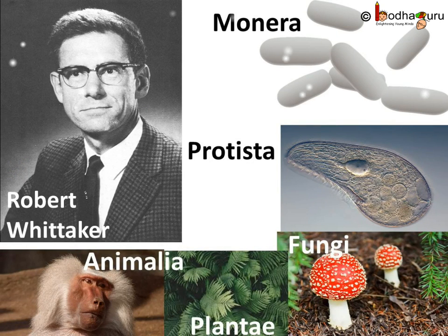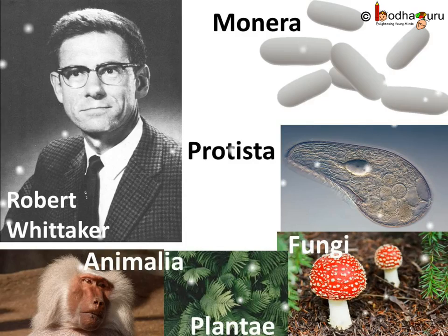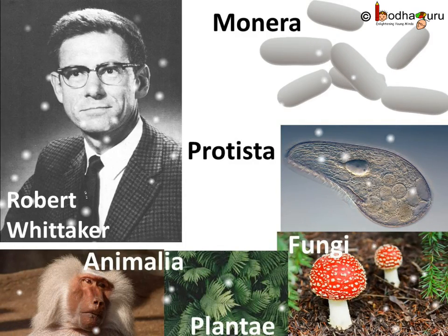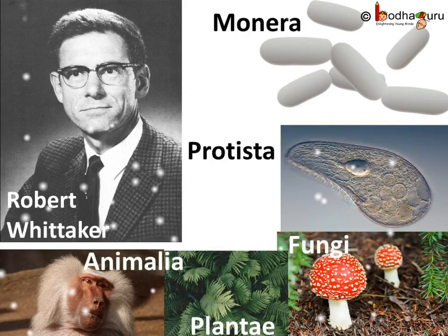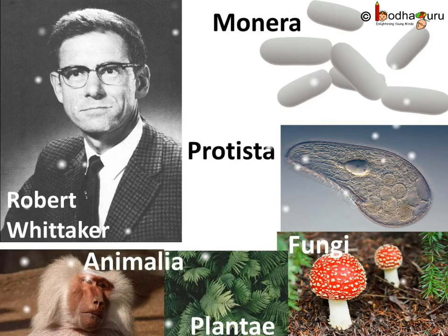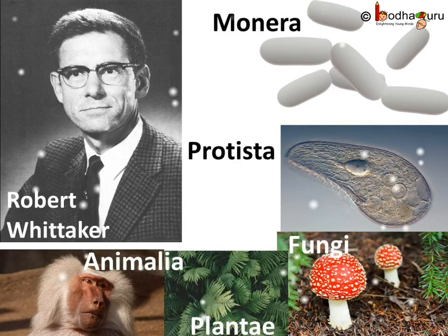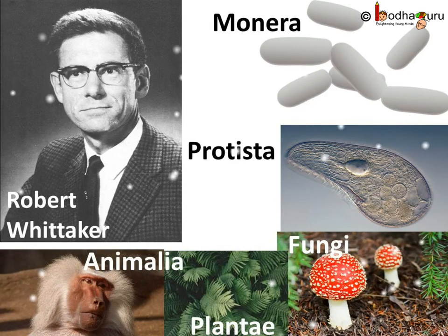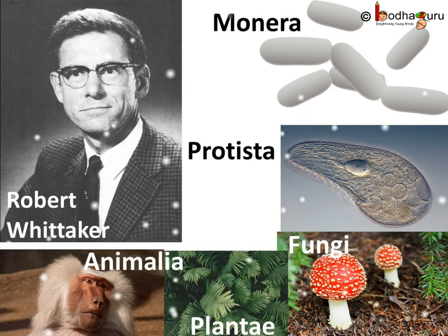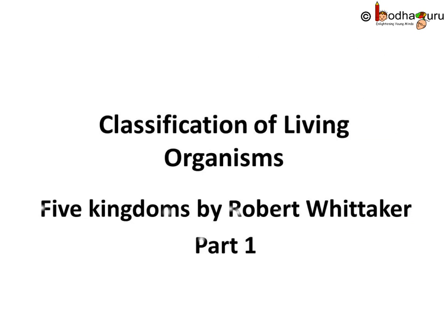So now you know the characteristics of the five kingdoms — Monera, Protista, Fungi, Plantae, and Animalia — as proposed by Robert Whittaker. In the next class, we will understand how living organisms were systematically categorized into five different kingdoms based on their common characteristics. That's all for now. Bye-bye.